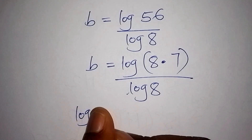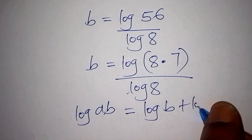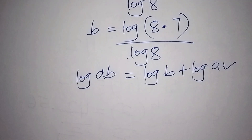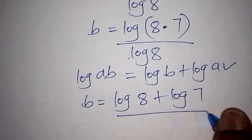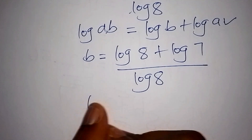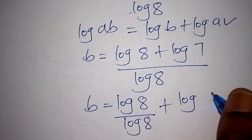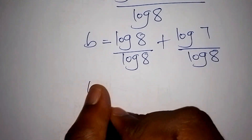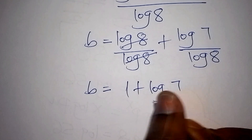Recalling that log of a times b equals log of a plus log of b, we can write b equals log of 8 plus log of 7 all over log of 8. Dividing both terms by log of 8, we get b equals log 8 over log 8 plus log 7 over log 8. Log 8 and log 8 cancel, so we have b equals 1 plus log 7 over log 8.